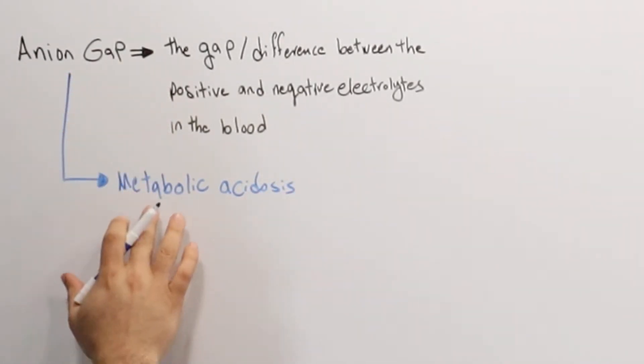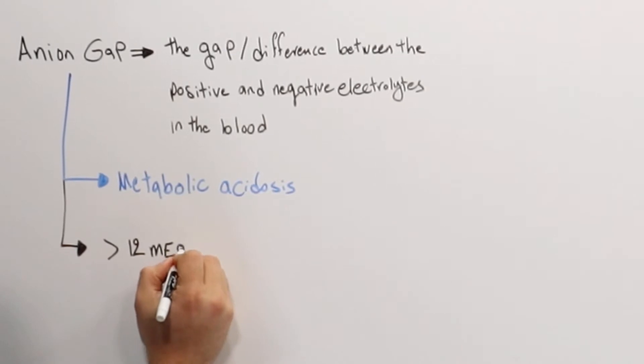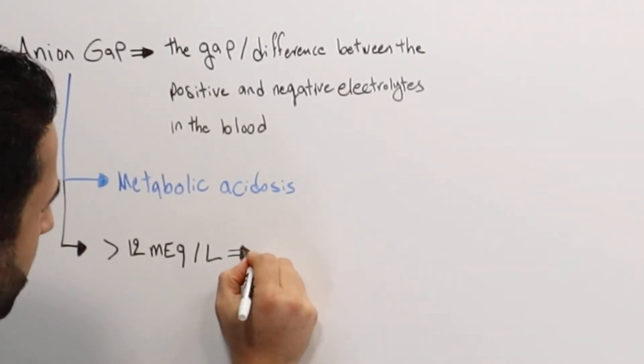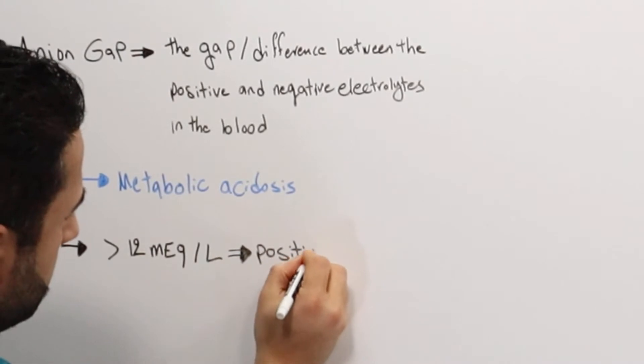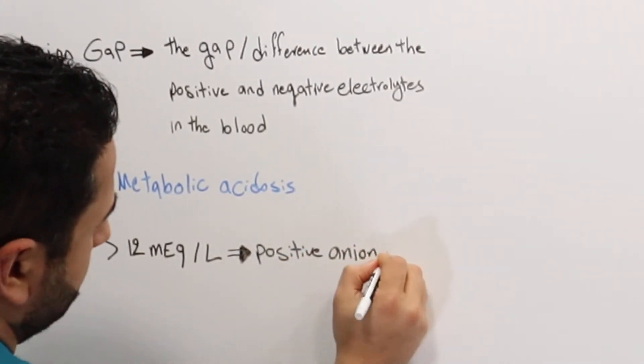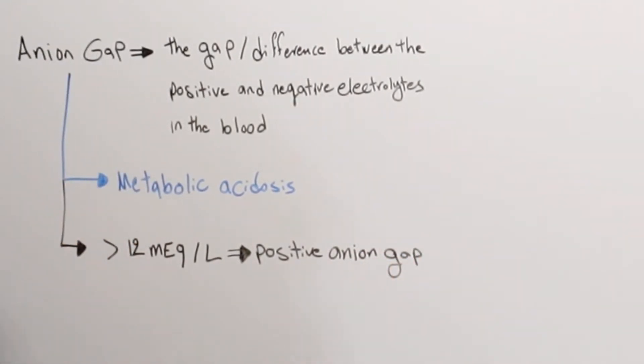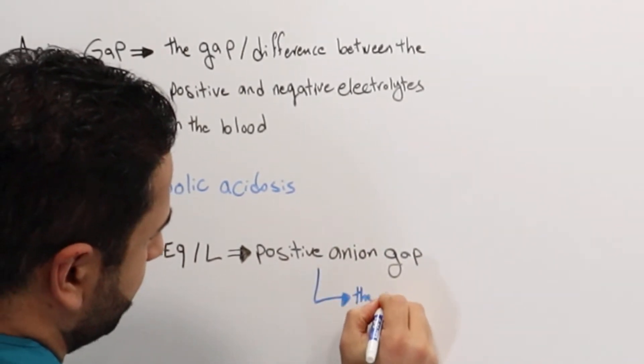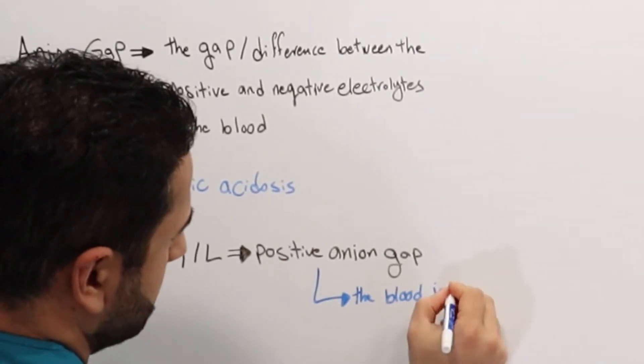So from anion gap, we can see basically how acidic the blood is. And we can tell from that, if anion gap is larger than 12 mEq per liter, then we have a positive anion gap, which means in this case that the blood is acidic.